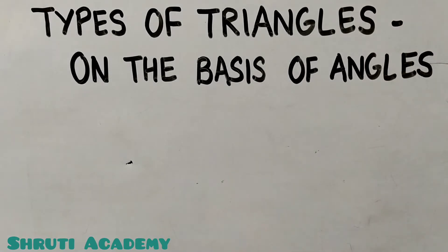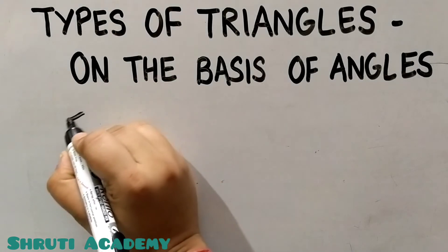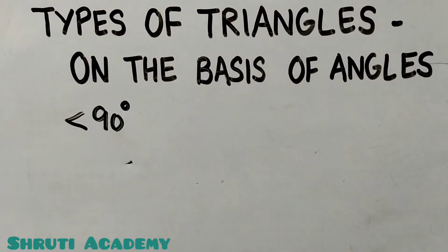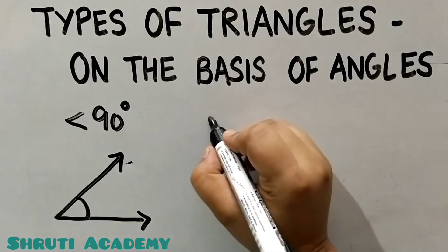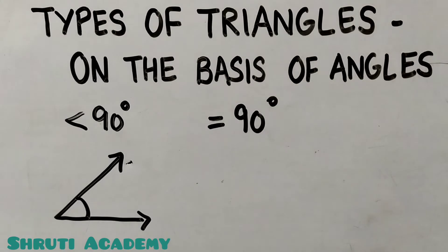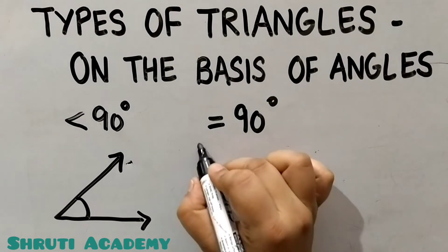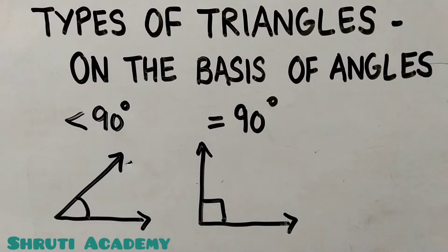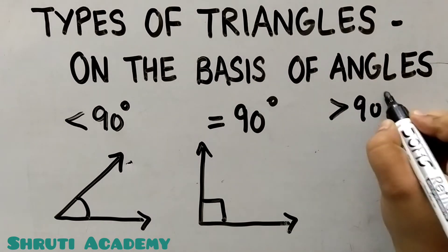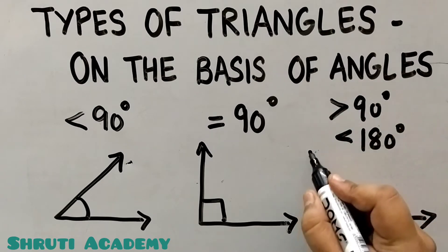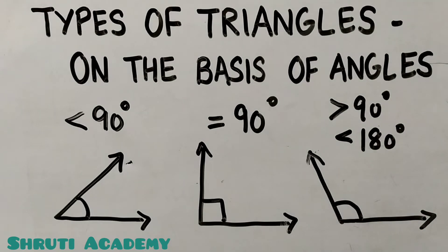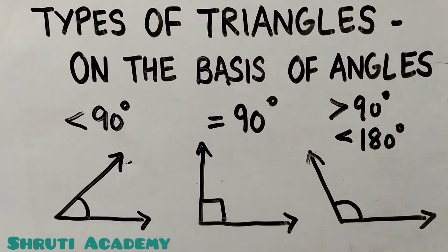An angle whose measurement is less than 90 degrees is known as an acute angle. An angle whose measurement is equal to 90 degrees is known as a right angle. An angle whose measurement is greater than 90 degrees but less than 180 degrees is known as an obtuse angle. So we have revised acute angle, right angle, and obtuse angle.